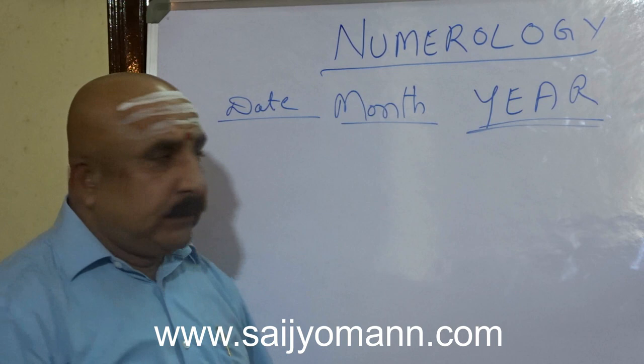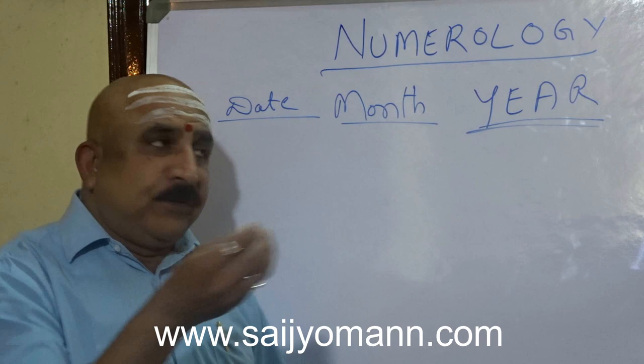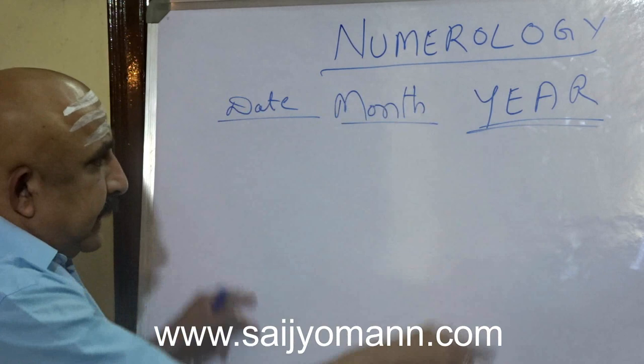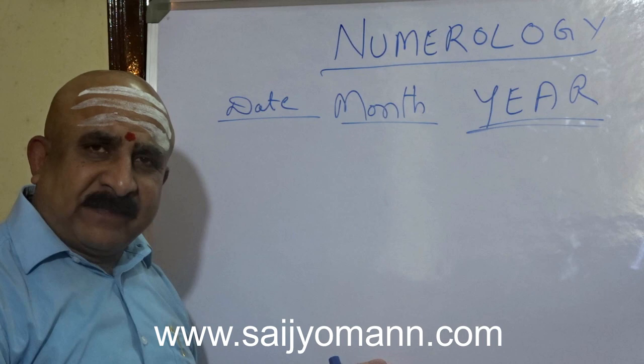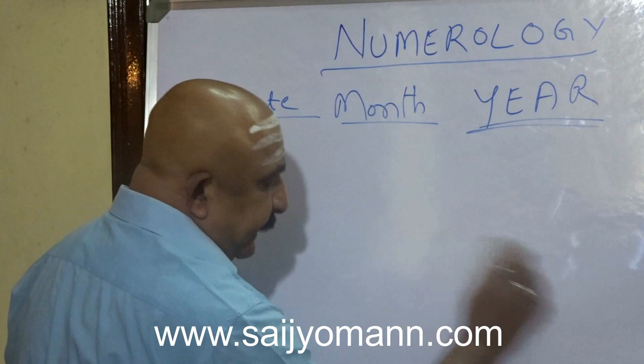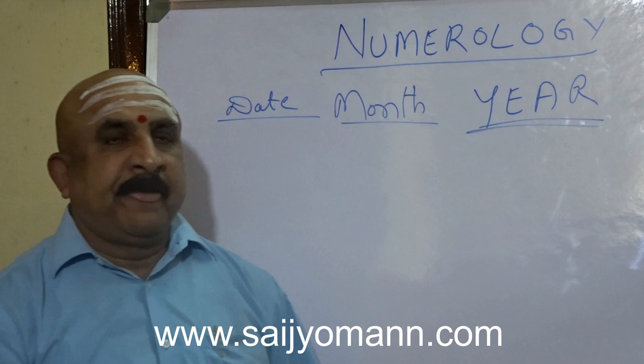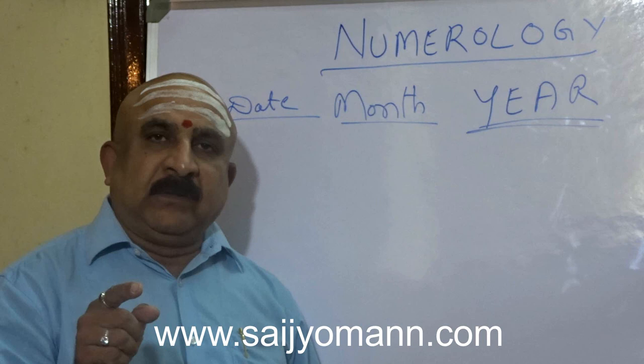Before getting into complete date details, understand this network numerology. It plays with three things: date — which covers offspring, spirit, siblings; month; and year — which tells about the lifestyle of a native or a person.